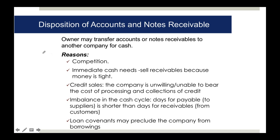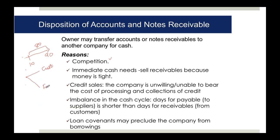What are the reasons for disposal of accounts receivable? Competition may require you to offer long credit periods of 90 days, but you need money in 10 days. So you sell goods to your customer but sell the customer's balance to someone else. You have a customer and a factor - a factor is the person who buys your receivables. Selling goods to the customer but selling receivables to the factor is called disposition.